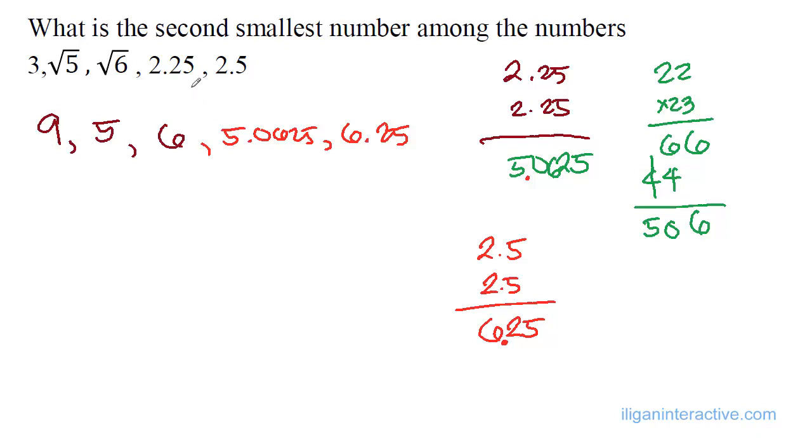The smallest number will be, as we can see here, the square root of 5 is 5, so we start with square root of 5, followed by 2.25, followed by square root of 6, followed by 2.5, and then of course lastly 3.